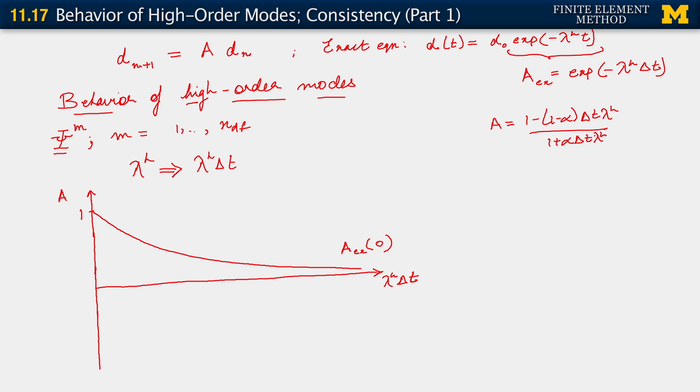Because we want to look at it in the limit as lambda h delta t tends to infinity, I'm going to simply divide through by that quantity. So I get 1 over lambda h delta t minus 1 minus alpha divided by 1 over lambda h delta t plus alpha. So I'm going to look then for various values of alpha. I'm going to look at what happens as limit lambda h delta t tends to infinity.